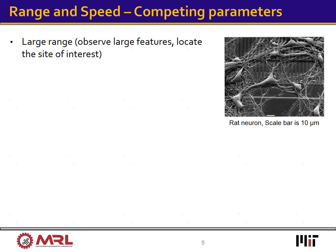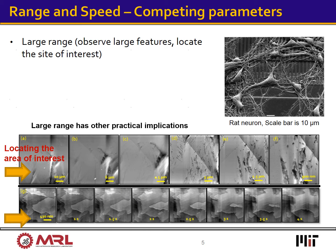Many samples of interest have features that are too large. The image on the right shows rat neurons in a substrate. Each neuron is tens of microns wide, and so requires a large field-of-view microscope. Large range has other practical implications as well. Ideally, to determine an area of interest, one needs to be able to get a large view before zooming into an area of interest for additional study. The series of images at the bottom of the slide shows one such example scenario.